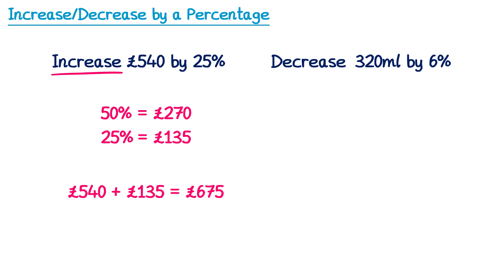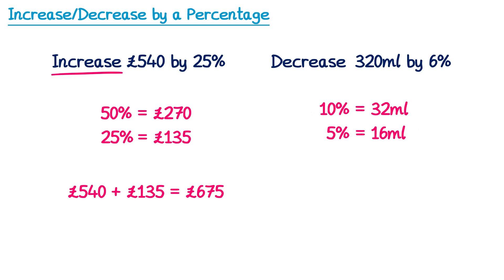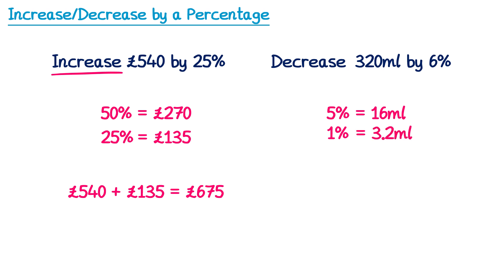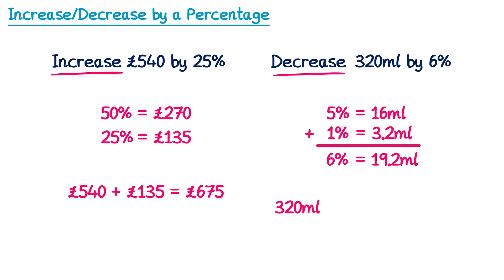For the second question, we need to decrease by 6%. To find 6%, I first find 10% of 320, which is 32. Dividing by 2 gives 5%, which is 16. Then I find 1% by dividing 320 by 100, which is 3.2. Adding 5% and 1% gives 6%, and 16 + 3.2 = 19.2. Because the question says decrease, we subtract: 320 − 19.2 = 300.8.